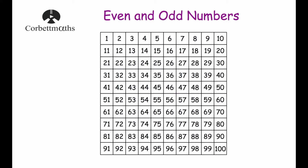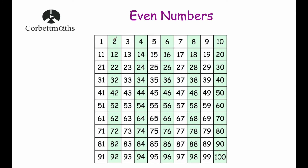If we colour all the even numbers green, they will look something like this. So we've got 2, 4, 6, 8, 10, 12, 14, 16 and so on. All of these numbers in green are even. There are 5 columns. We've got the first column where all the numbers end in 2 — so 2, 12, 22, 32, 42 and so on. The next column where the numbers end in 4 — 4, 14, 24, 34, 44 and so on.